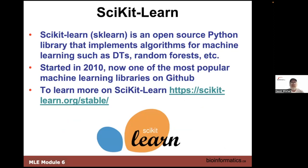What is scikit-learn? You can also call it sklearn — that's probably how I'll refer to it more often. It's an open source library in Python with algorithms for machine learning: you can implement decision trees, random forests, and a number of other standard techniques. It's been around for about 13 years and is a very popular library. You can click the link on the website to get more information about its history, development, and news.